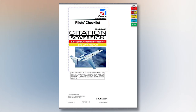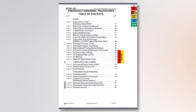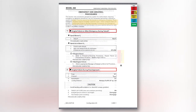First, we accept the terms and conditions. Once we get to the title page, we have quick links to get to the major sections. Notice that both the normal and emergency abnormal procedures are here in one document. Let's click EMER abnormal, which brings us to that table of contents. Let's say we are in the sim and we lost an engine after V1. So click engine failure during takeoff — bingo, there we are.